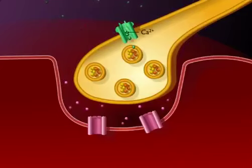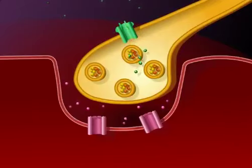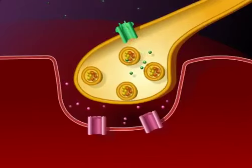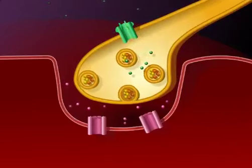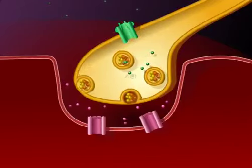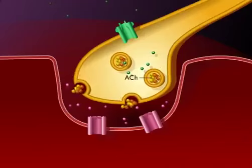Calcium ions enter the presynaptic terminal and cause vesicles to release their neurotransmitter acetylcholine from the synaptic vesicles into the presynaptic cleft.